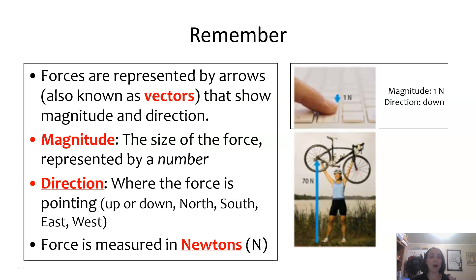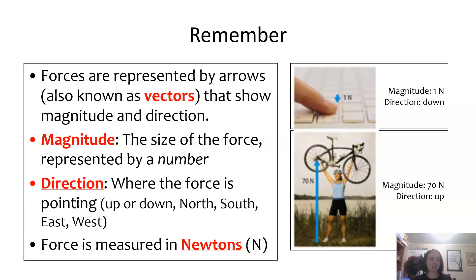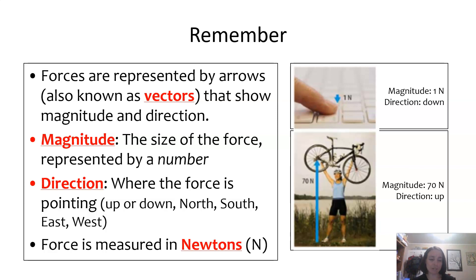So if you are pushing down on your keyboard, you might use a magnitude of one newton and the direction is down. If you feel really proud after a bike ride and you lift your bike up, it might take a magnitude of 70 newtons because of the weight of the bike, and your direction is up.